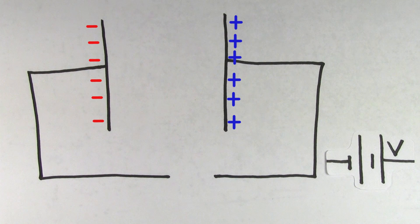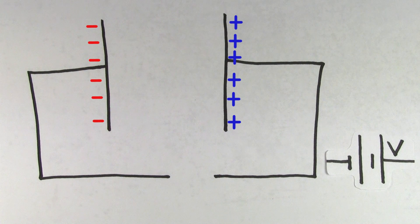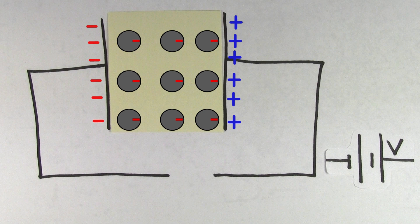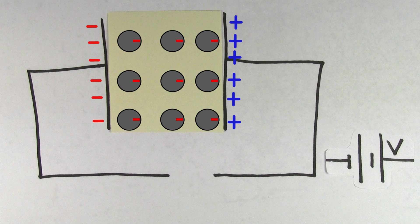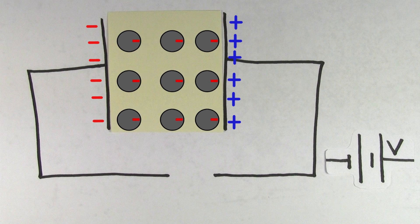So even after removing the battery, the charge on the plates is going to remain the same, and the voltage will also remain the same as the voltage of the battery that charged it up. Now, imagine placing a dielectric in between the plates of the capacitor. The dielectric material is made out of atoms and molecules, and when placed between the plates of this charged-up capacitor, the negative charges in the dielectric are going to get attracted to the positive plate. But those negatives can't travel to the positive plate since the dielectric is a non-conducting material. However, the negatives can shift or lean towards the positive plate.